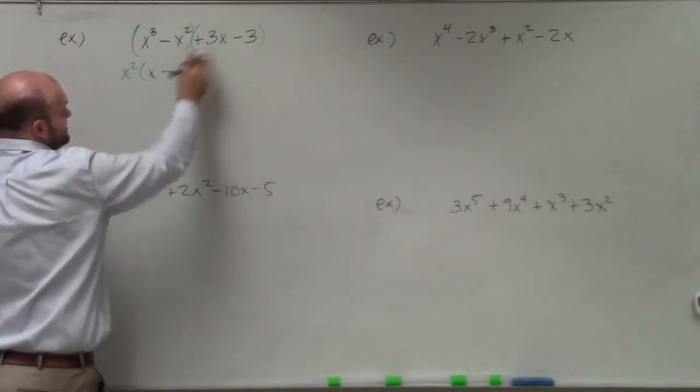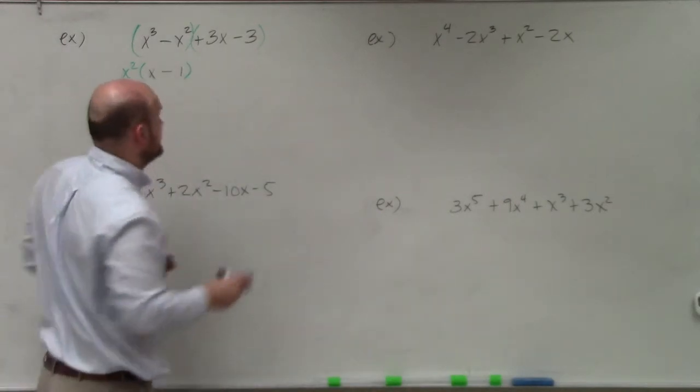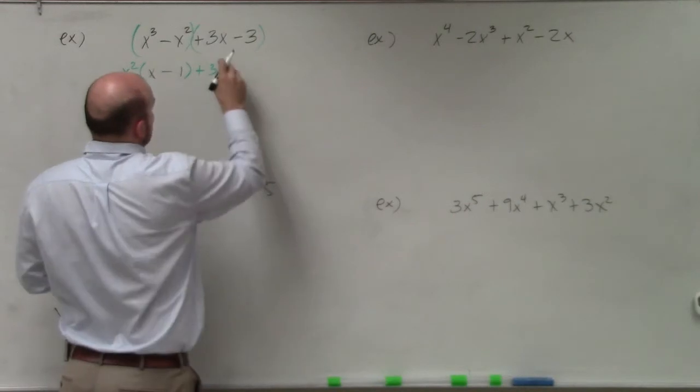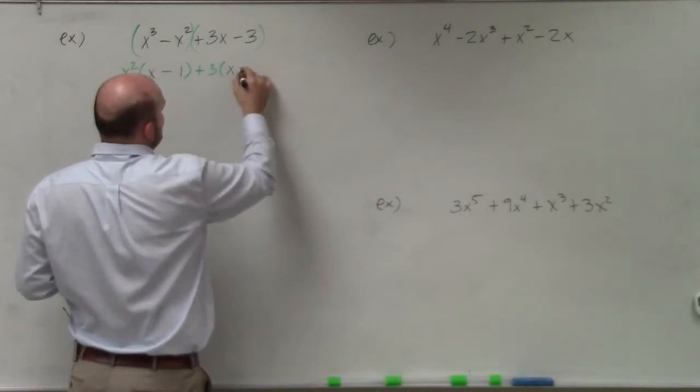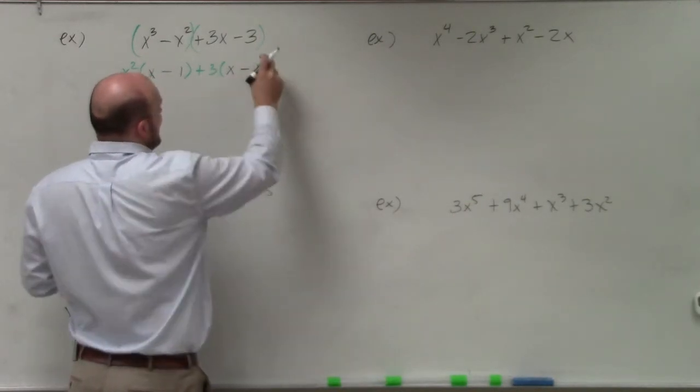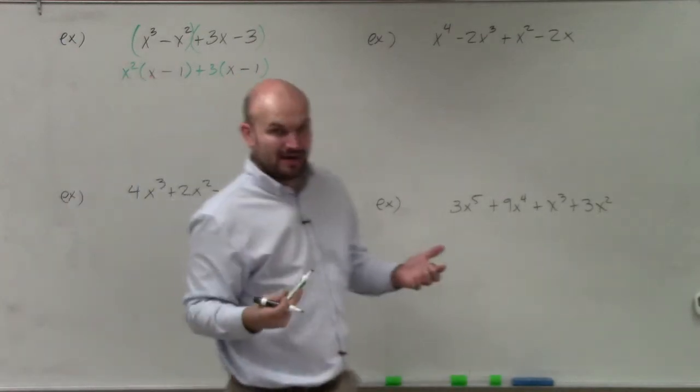And then out of these two you can see that they both share a positive 3. So I factor out a positive 3. Then you can see inside the parentheses by doing that I have a common x minus 1.